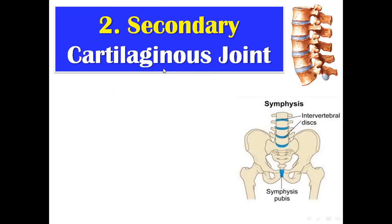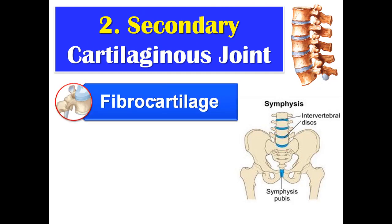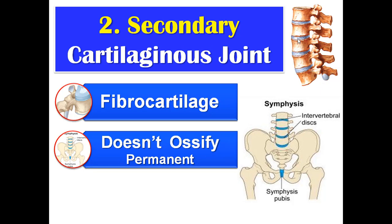In the secondary cartilaginous joint, the cartilage between the two bones is fibrocartilage. Since it is fibrocartilage, this joint doesn't ossify, so this joint is permanent — present all the time — and it permits a limited degree of movement.